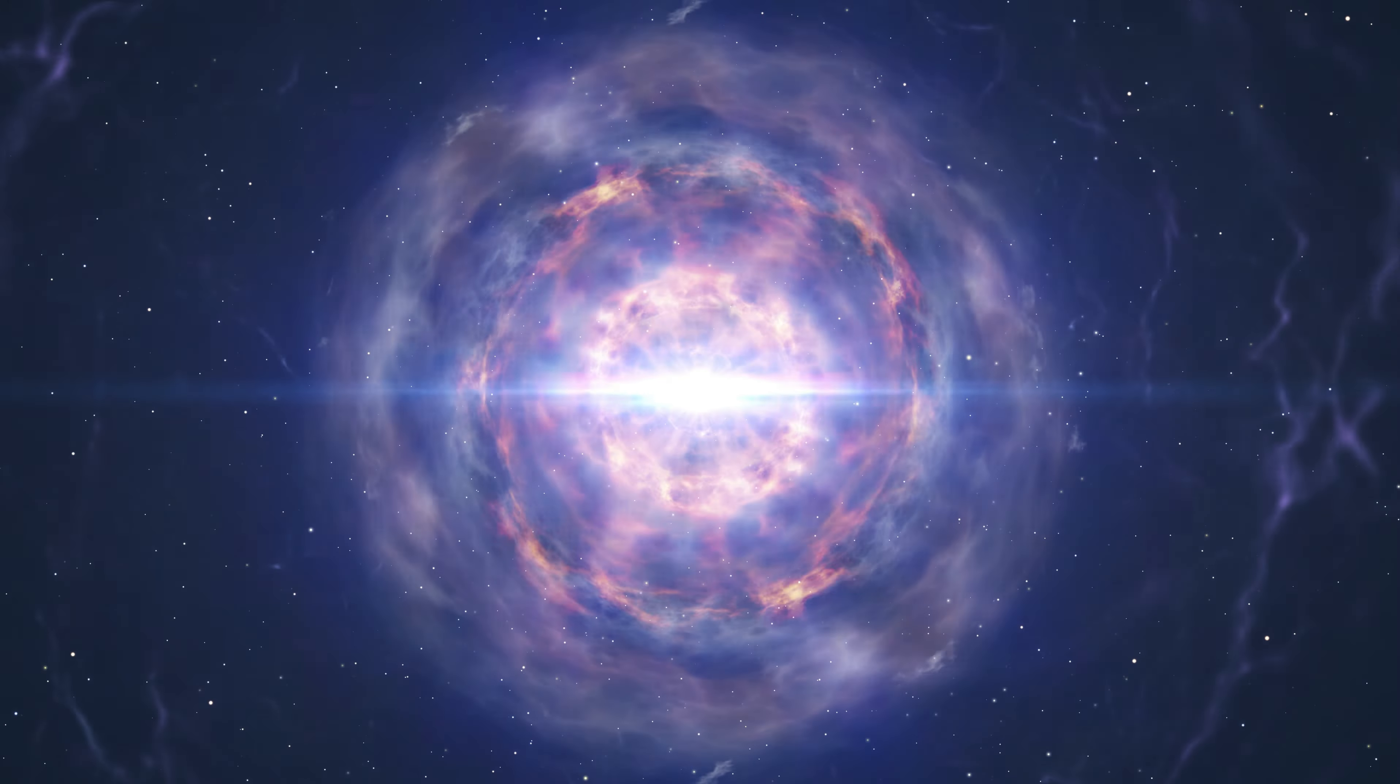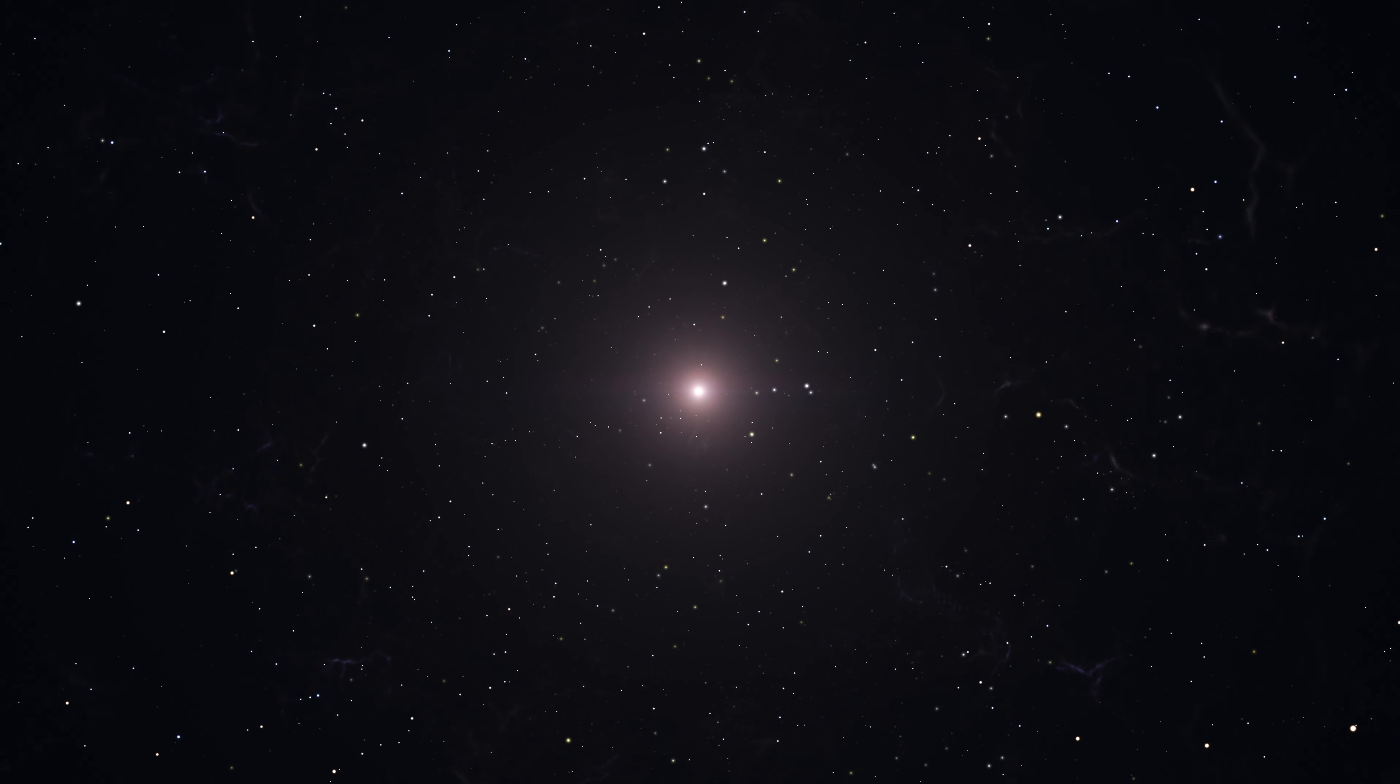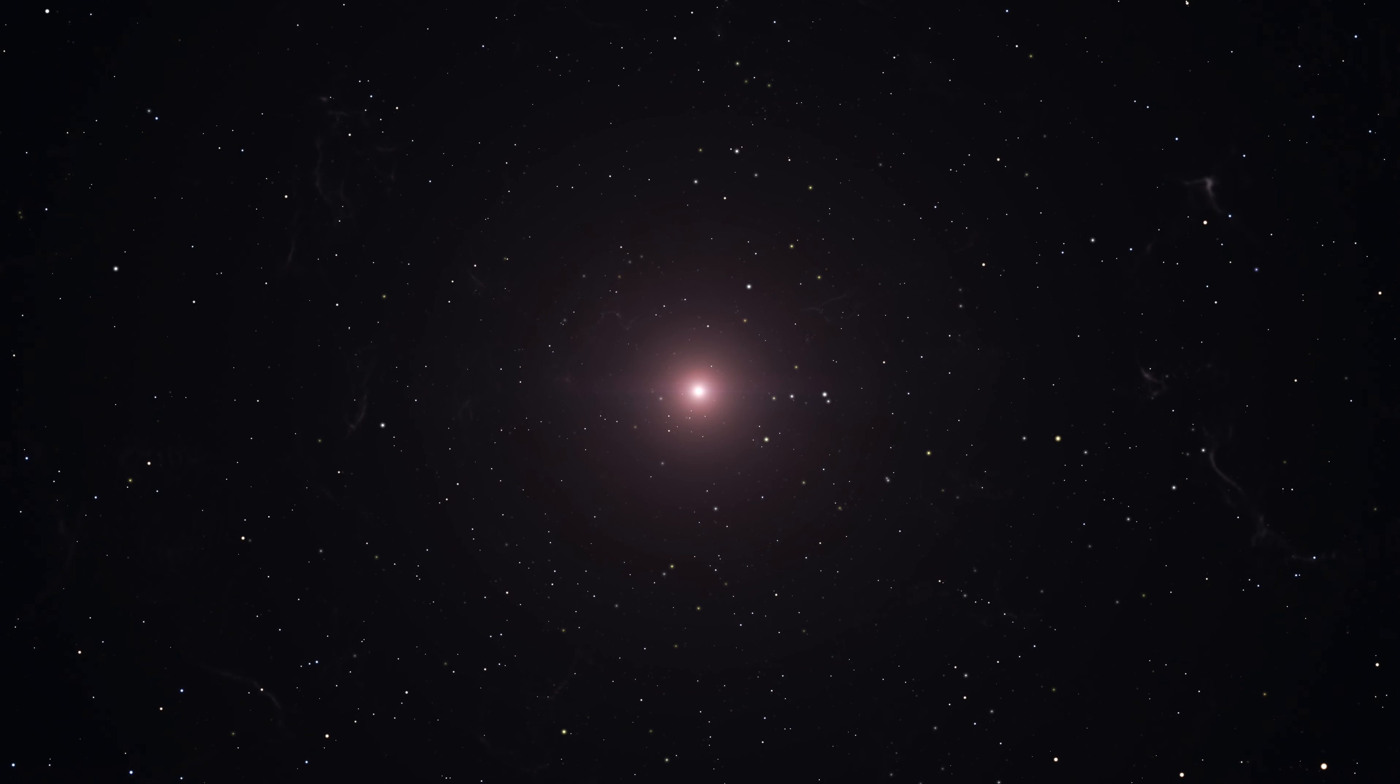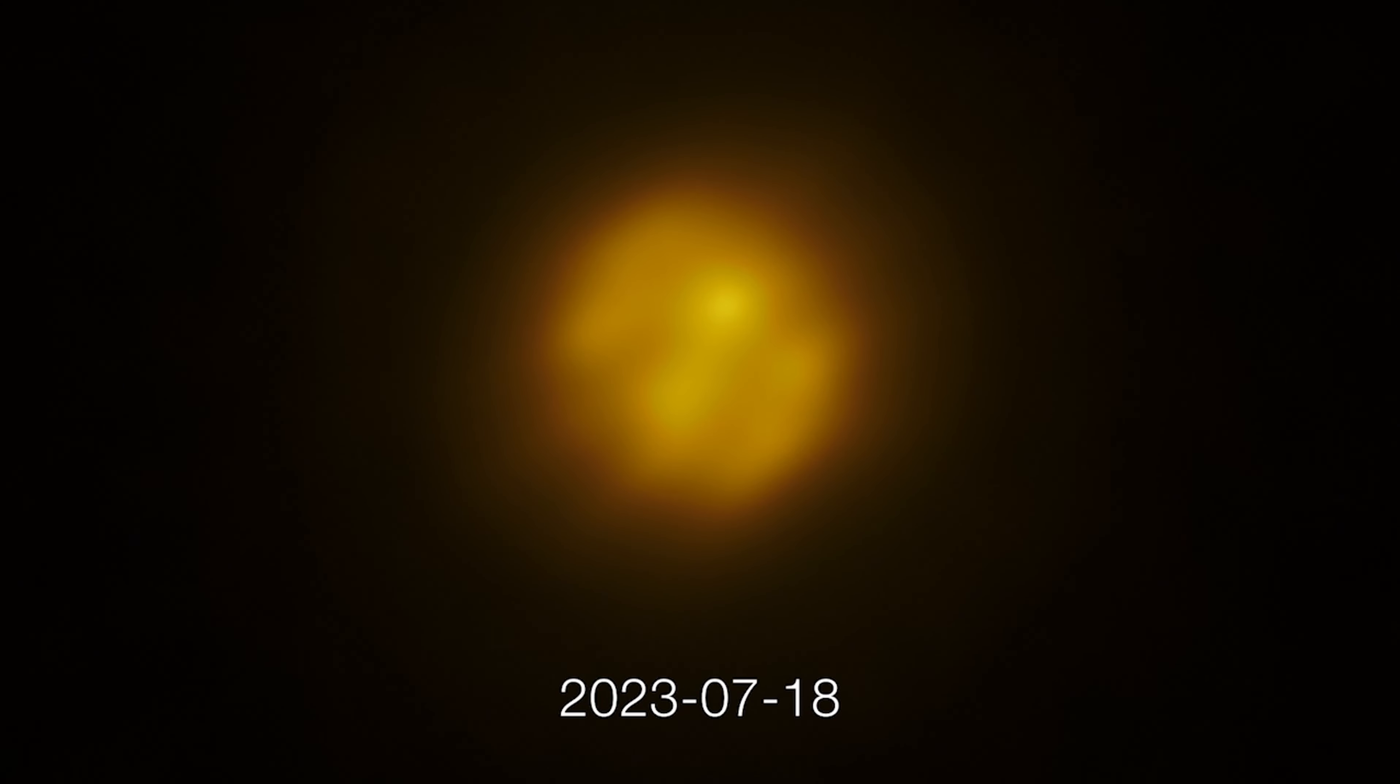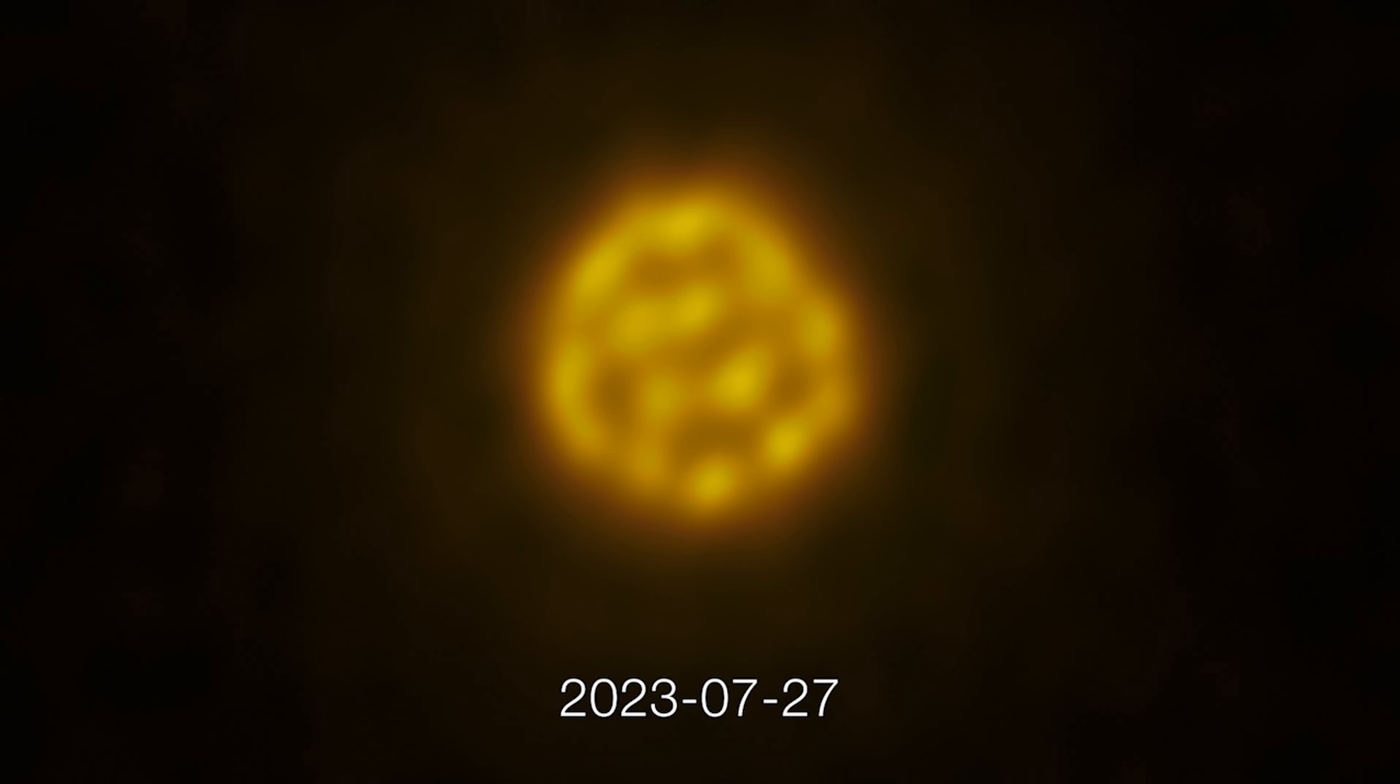Normally, Betelgeuse ranks among the top 10 brightest stars in the night sky, with astronomers well aware of its periodic dimming, occurring approximately every 425 days, during which it typically loses about a quarter of its maximum brightness temporarily. However, in 2019, astronomers were stunned to observe Betelgeuse's brightness dropping by an unprecedented two-thirds, a change noticeable even to the naked eye.